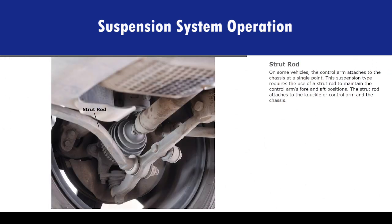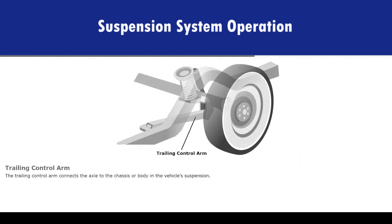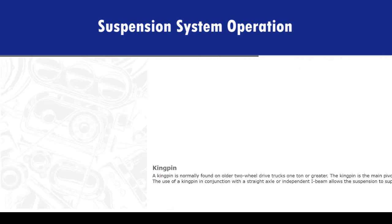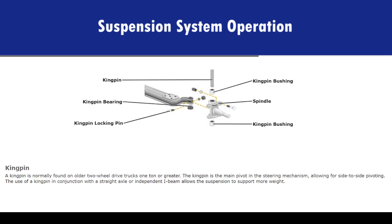On some vehicles, the control arm attaches to the chassis at a single point. This suspension type requires the use of a strut rod to maintain the control arm's fore and aft positions. The strut rod attaches to the knuckle or control arm and the chassis. The trailing control arm connects the axle to the chassis or body in the vehicle's suspension. A kingpin is normally found on older two-wheel drive trucks one ton or greater. The kingpin is the main pivot in the steering mechanism, allowing for side-to-side pivoting. The use of a kingpin in conjunction with a straight axle or independent I-beam allows the suspension to support more weight.